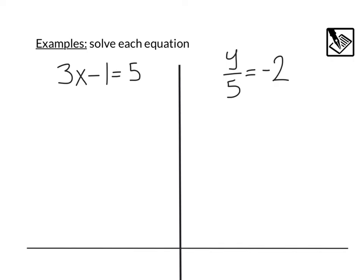I see our variables over here next to the 3, so I'm going to use my inverse operation, plus 1 on both sides of the equation. That's going to give me 3x equals 5 plus 1, which is 6. I have 3 times x, I could divide both sides by 3. That's going to give me x equals 6 divided by 3, which is 2.